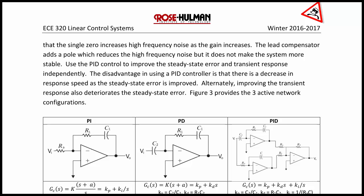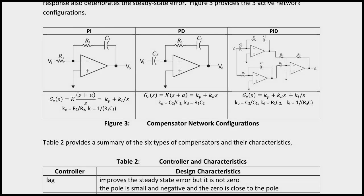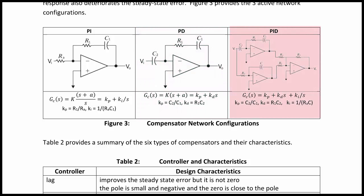Figure 3 provides the network configuration for the three active networks. The PI controller has a resistor and capacitor in series in the feedback loop and a resistor as the input. The PD controller has a resistor and capacitor in series as part of the feedback but a capacitor as the input. These two are summed together to get the PID controller, passed through a summer where the gain K is adjusted using resistors R2.